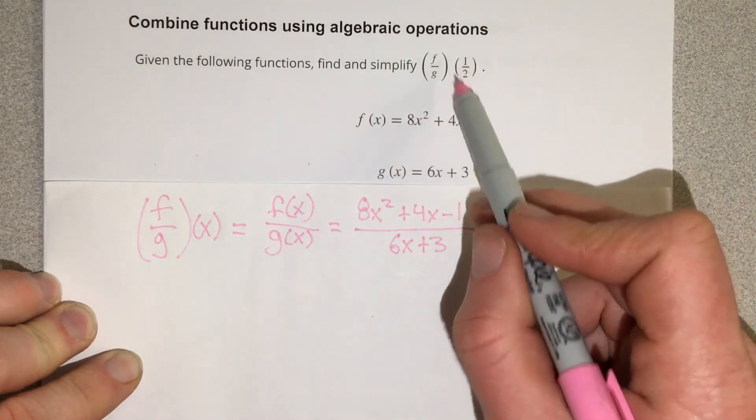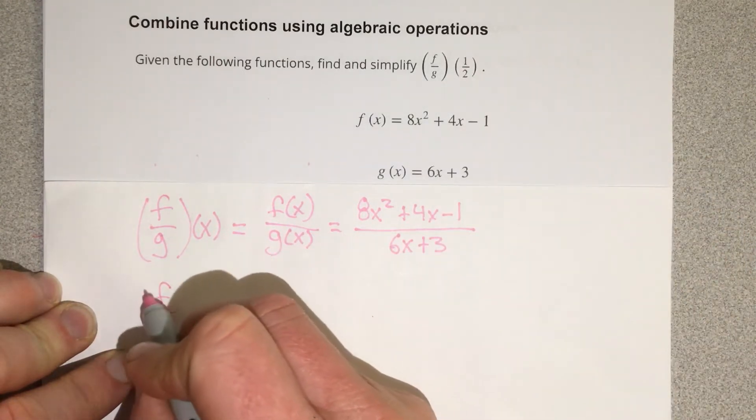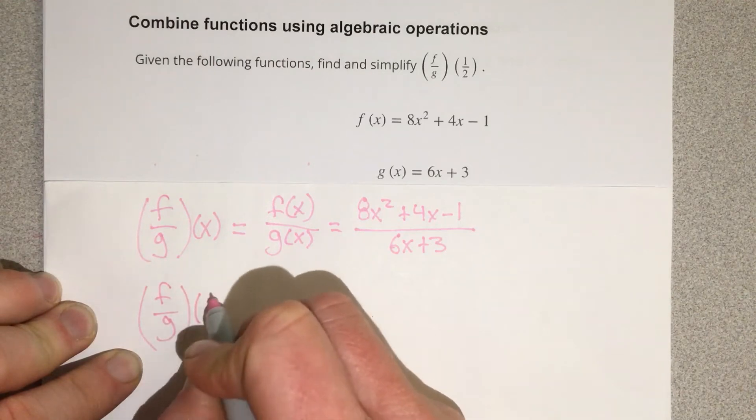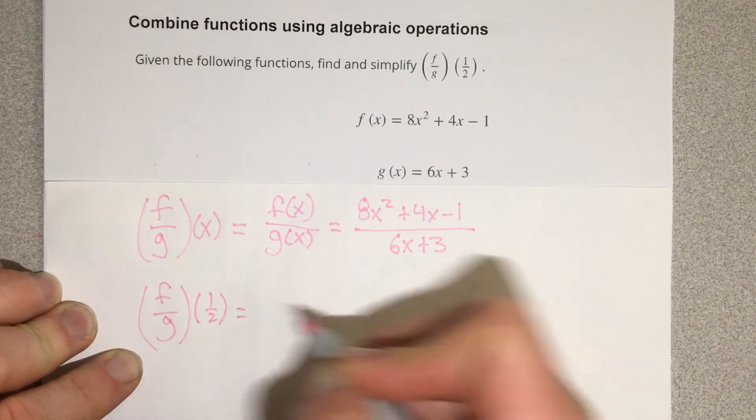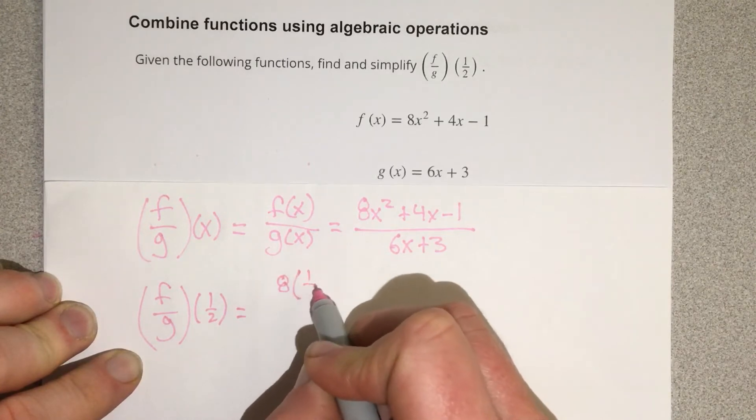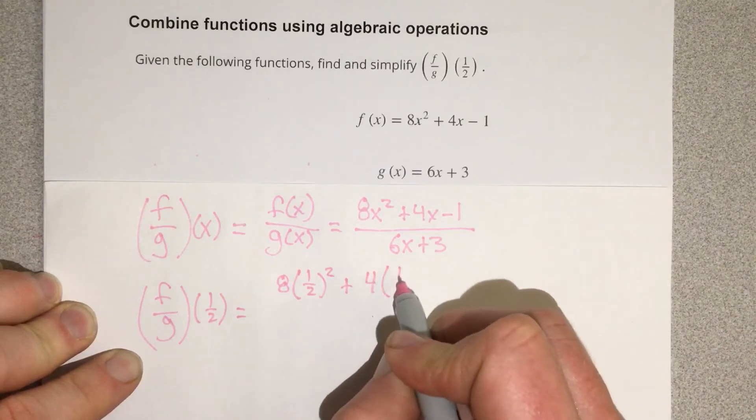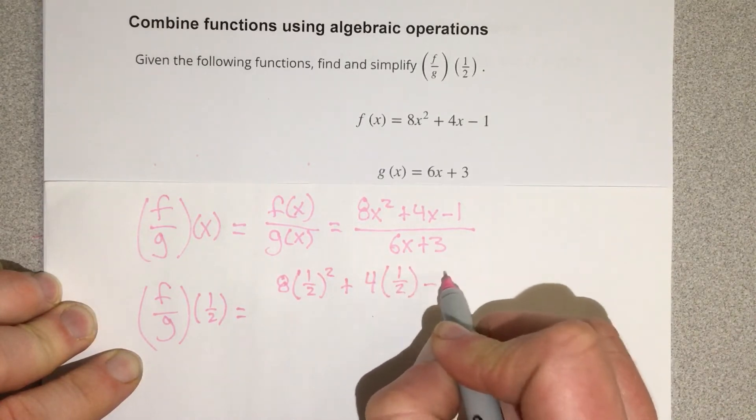Now they want me to input a half, so what I'm going to write is now f of g with an input of a half is going to equal 8 times one-half squared plus 4 times one-half minus 1.